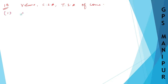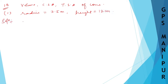For part one, the radius of the base is given as 3.5 meters and the height is 12 meters. We need to find the volume. The formula for volume of a cone is 1/3 × π × r² × h.